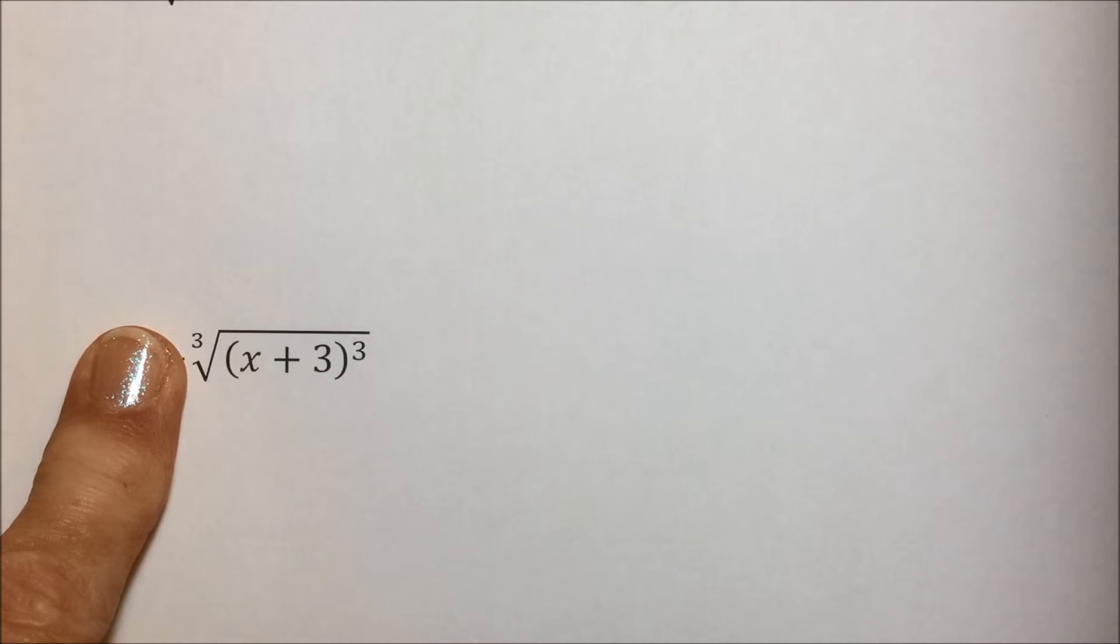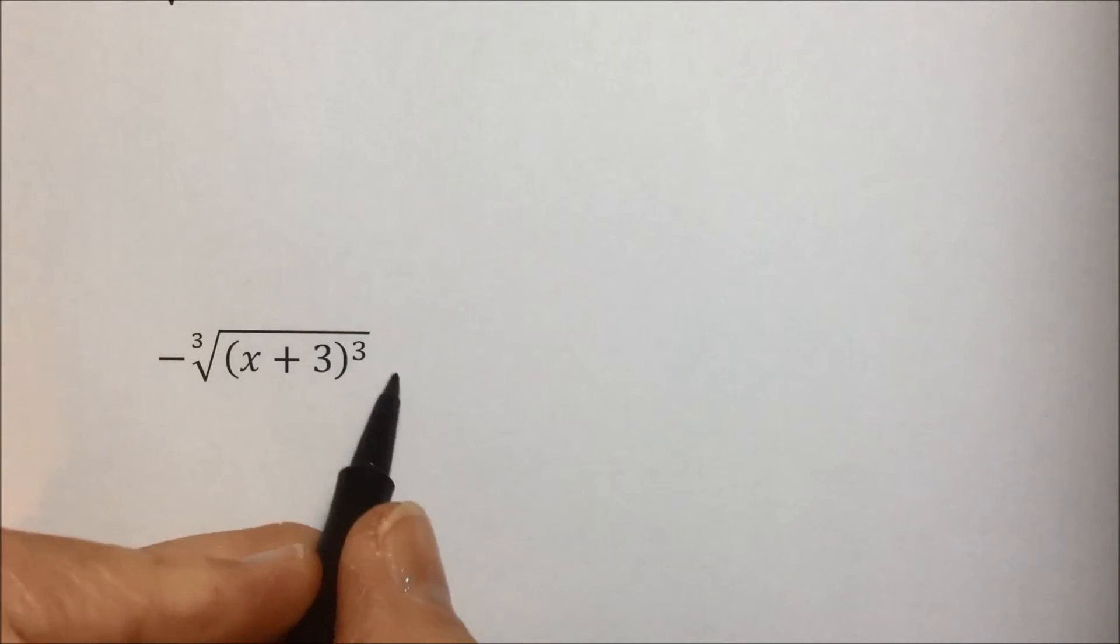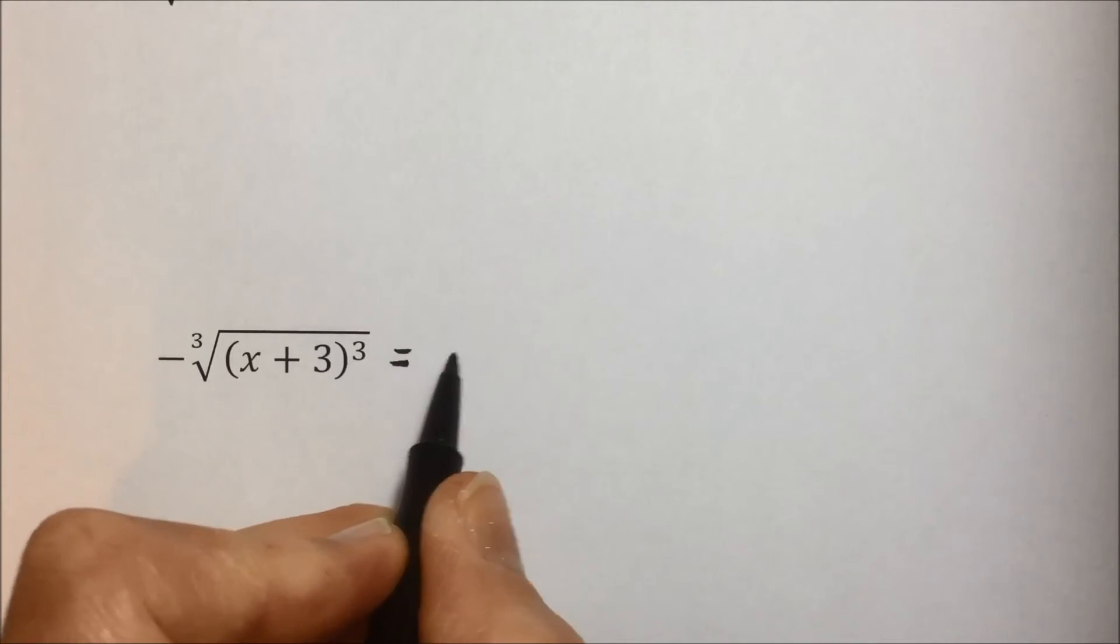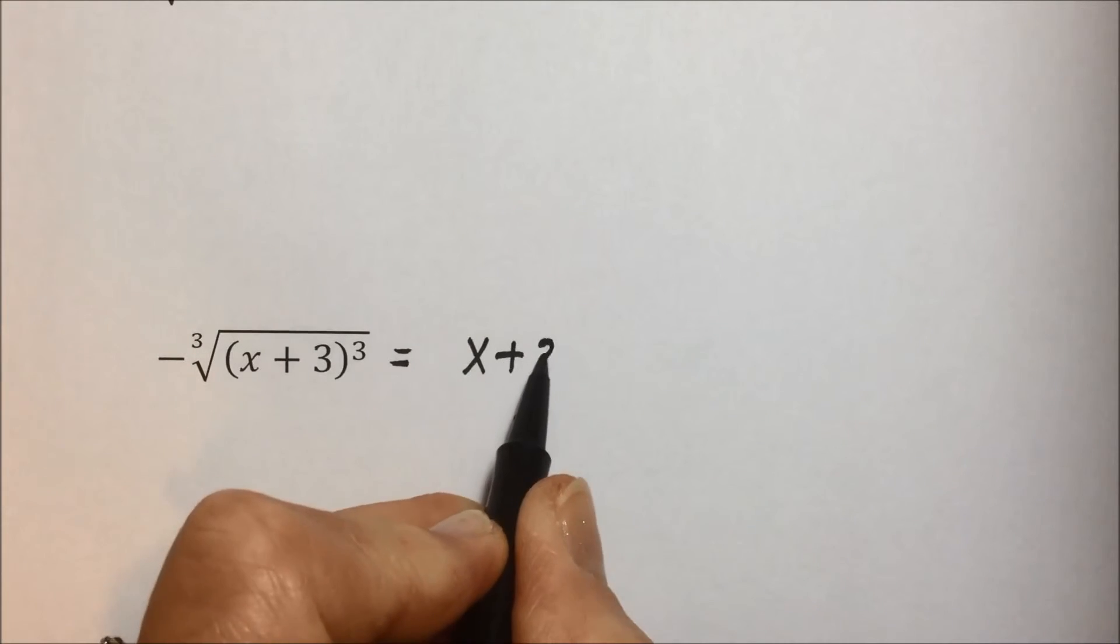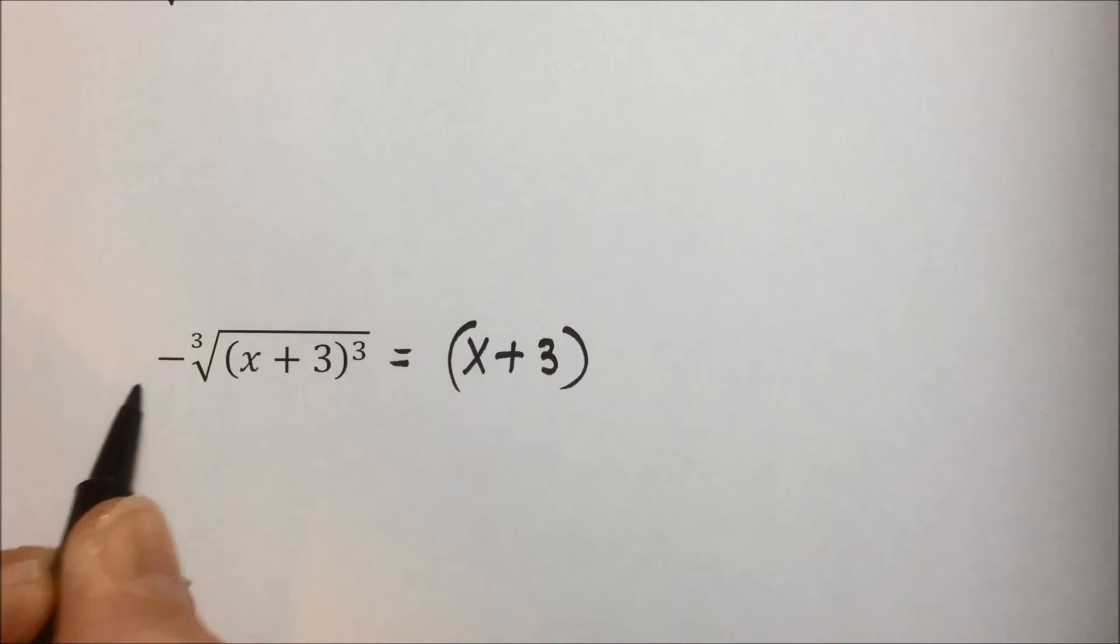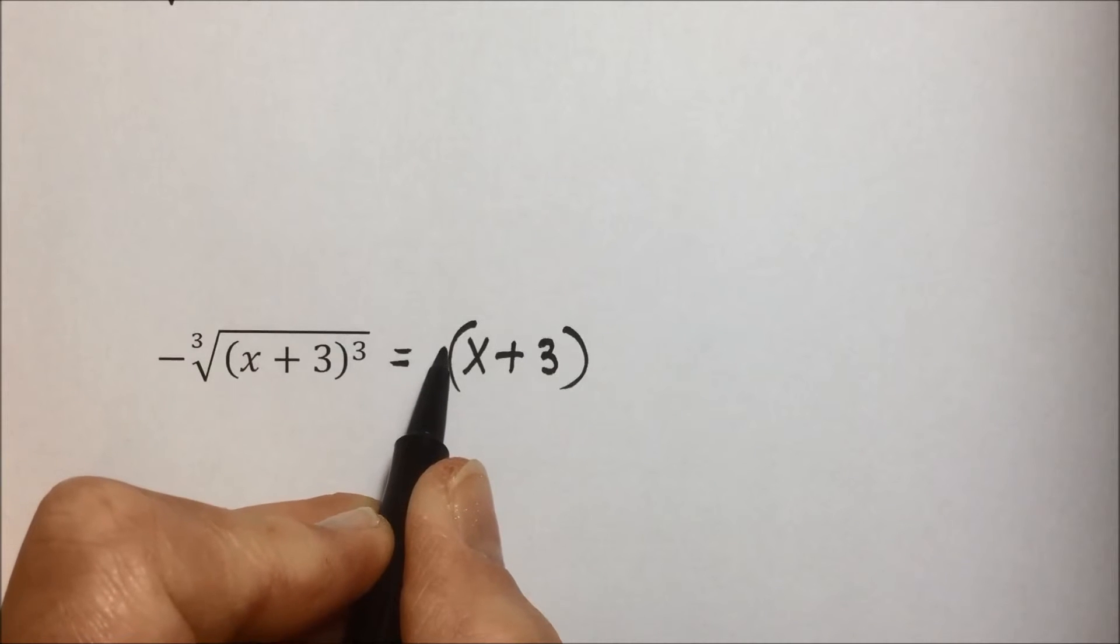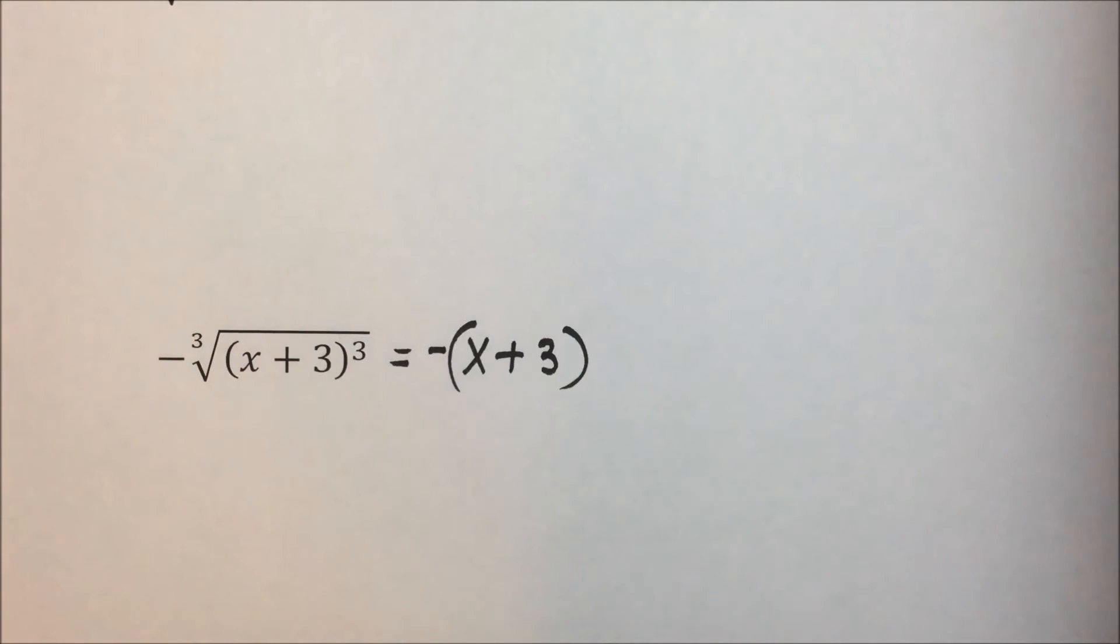So simplifying this, we're just going to take the cube root of something to the third power is that value. It is x+3, and the only reason we're putting a minus sign is because they're asking us to take the opposite of our simplification here of this radical.